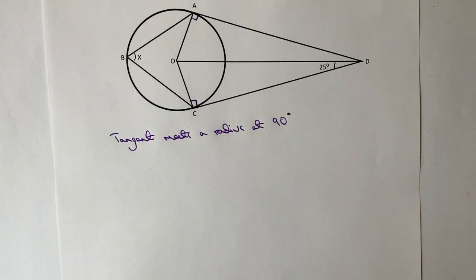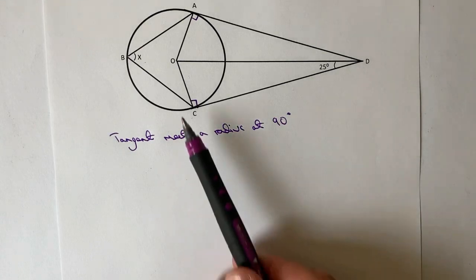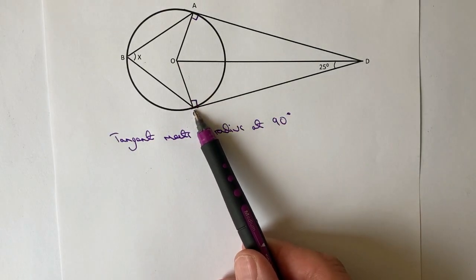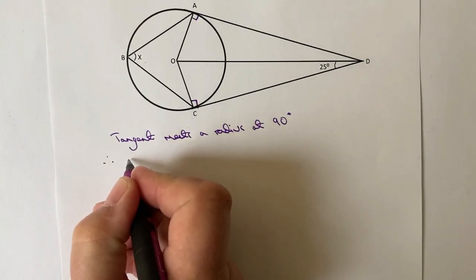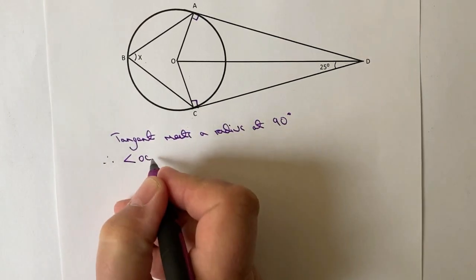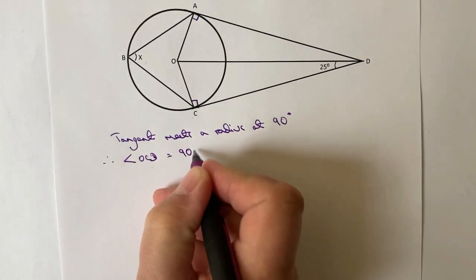So just to further reinforce that because it meets the radius at 90 degrees, what I can say then is that angle OCD is going to be equal to 90 degrees. So therefore angle OCD equals 90 degrees.